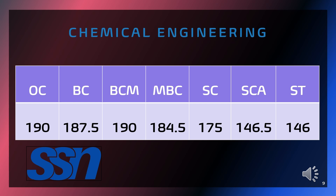Shri Sivasubramania Nader College of Engineering. Cut-off required for Chemical Engineering: OC is 190, BC is 187.5, BCM is 190, MBC is 184.5, SC is 175, SCA is 146.5, ST is 146.